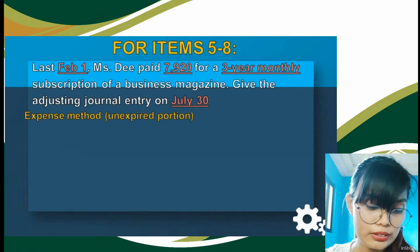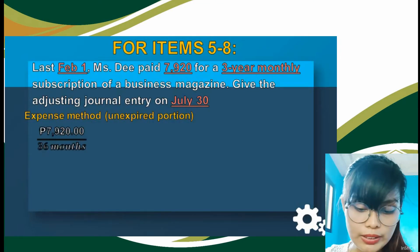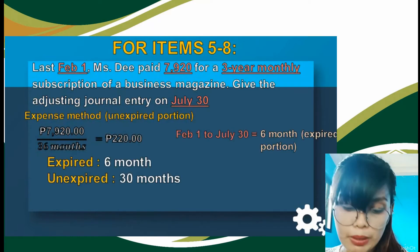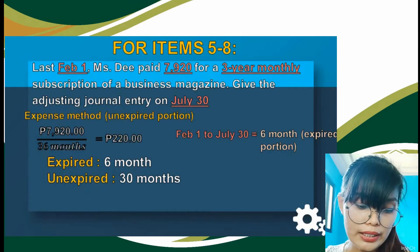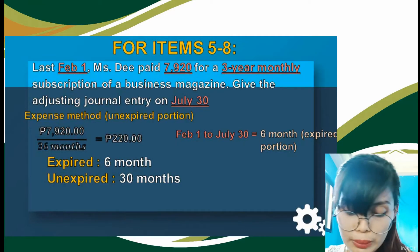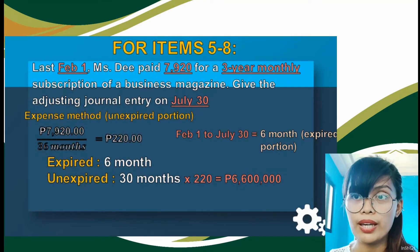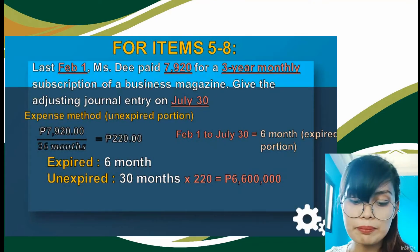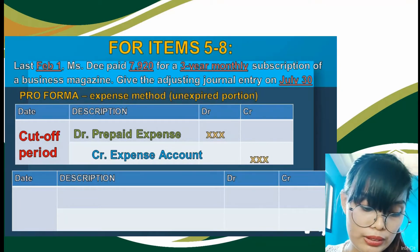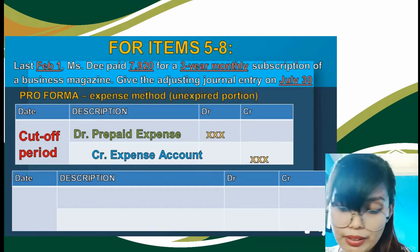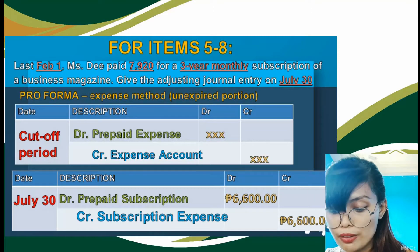For the expense method, we get the unexpired portion as of the cut-off date July 30. We have P220 per month, 6 months expired, and 30 months unexpired. Since we are using the expense method, we consider the 30 months multiplied by P220 and get P6,600. The adjusting entry is: debit prepaid subscription P6,600 and credit subscription expense P6,600.